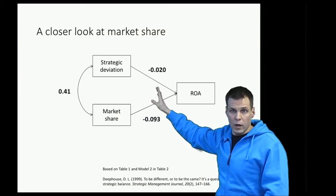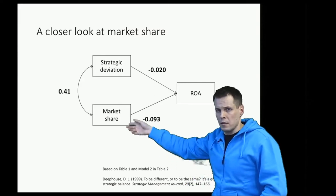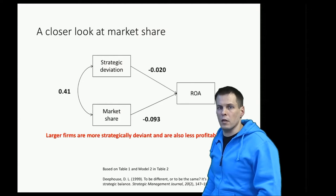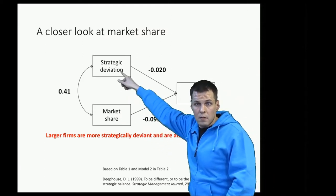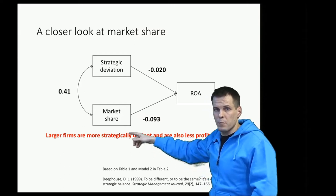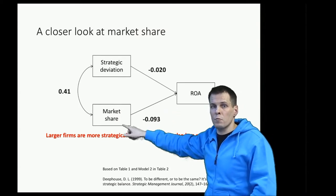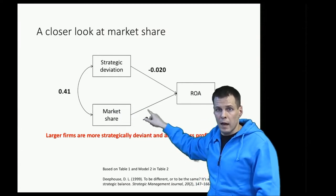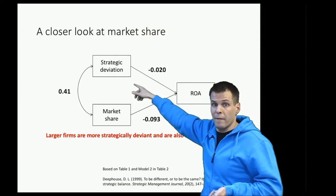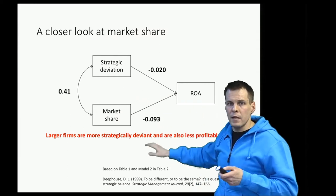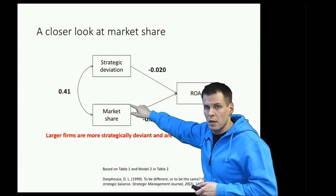The interpretation is that larger firms — firms with more market share — are more strategically deviant according to their definition. Larger firms are also less profitable. These two relationships cause a spurious relationship: if larger firms are more deviant and larger firms have smaller ROA, then if this effect was not controlled for, we would get a fairly different estimate for strategic deviation. If we don't control for market share, the effect of strategic deviation will be inflated because it confounds the effects of market share and strategic deviation.